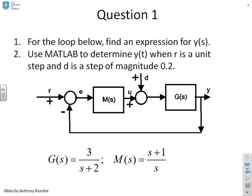First question: for the loop below, find an expression for y. You'll see y is here, but the key thing to note is there are two loop inputs — loop input r and loop input d. The second part of the question asks you to use MATLAB to determine y(t) when r is a unit step and d is a step of magnitude 0.2, but we'll focus on the first part for now and move to MATLAB later in the video.